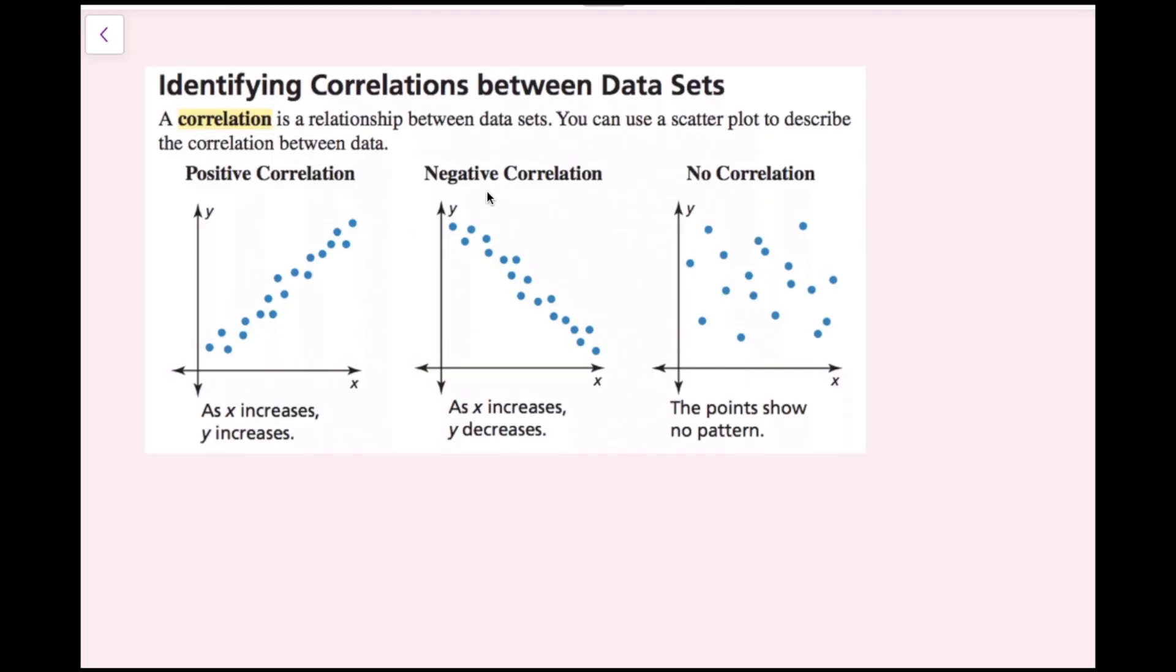A negative correlation is if one of the variables is increasing, the other one is decreasing. As x increases, my y value is tending to decrease. No correlation for this example is if there's really no distinct pattern that you can tell from the data. It doesn't really look like it's increasing or decreasing. These points are scattered all over the place, so there is no correlation.